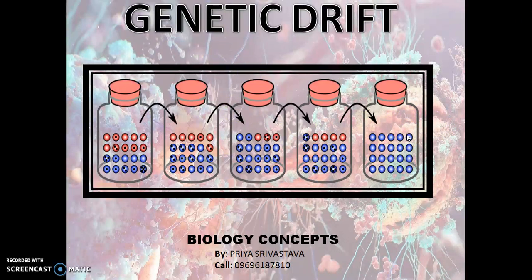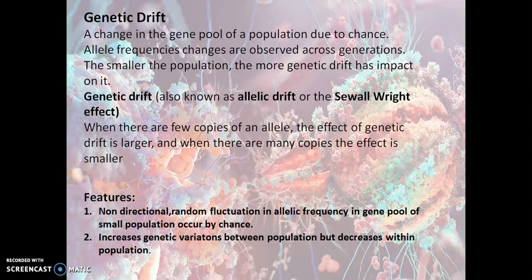In a small population, fixation can occur in just a few generations. This is the basic figure of genetic drift. Genetic drift is a change in the gene pool of a population due to chance — it occurs by chance, it is a random fluctuation, not goal-directed in terms of evolution. Allele frequency changes are observed across generations.